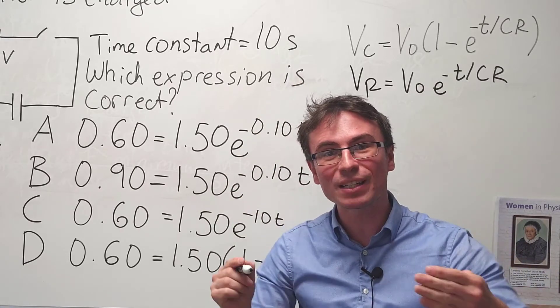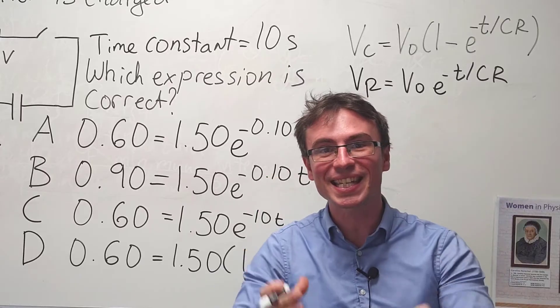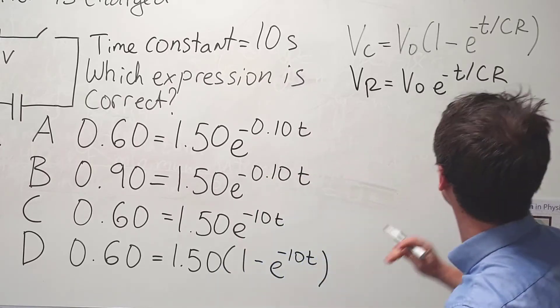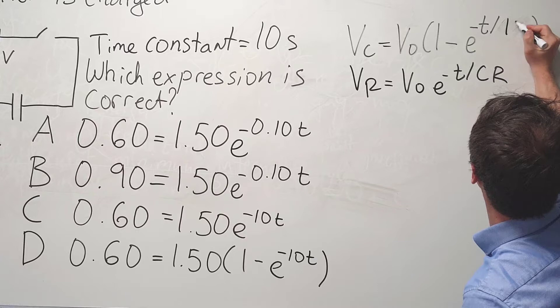Because the time constant is equal to 10 seconds, this means that C times R is equal to 10 seconds. So this means that this quantity here is equal to 10.